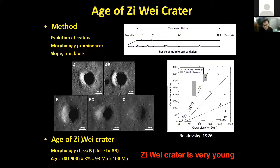Based on the surface rocks, inner wall slope, diameter, and depth-to-diameter ratio, we classified the crater as morphology B. Because its diameter is 500 meters, we estimate its age as 100 million years old. From the viewpoint of lunar evolution, the crater is very young, and the surface age is roughly 100 million years old.